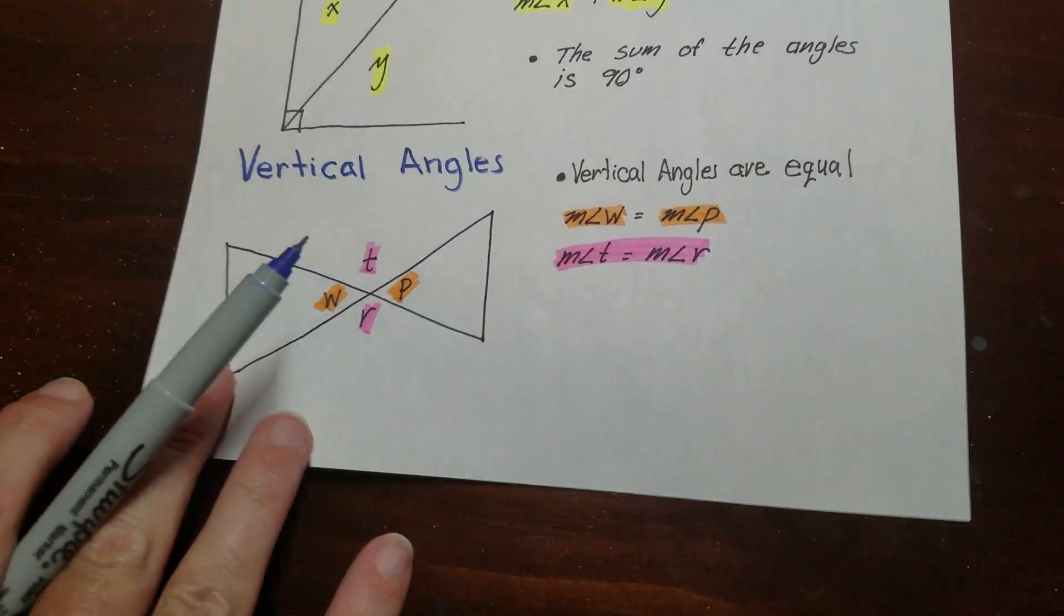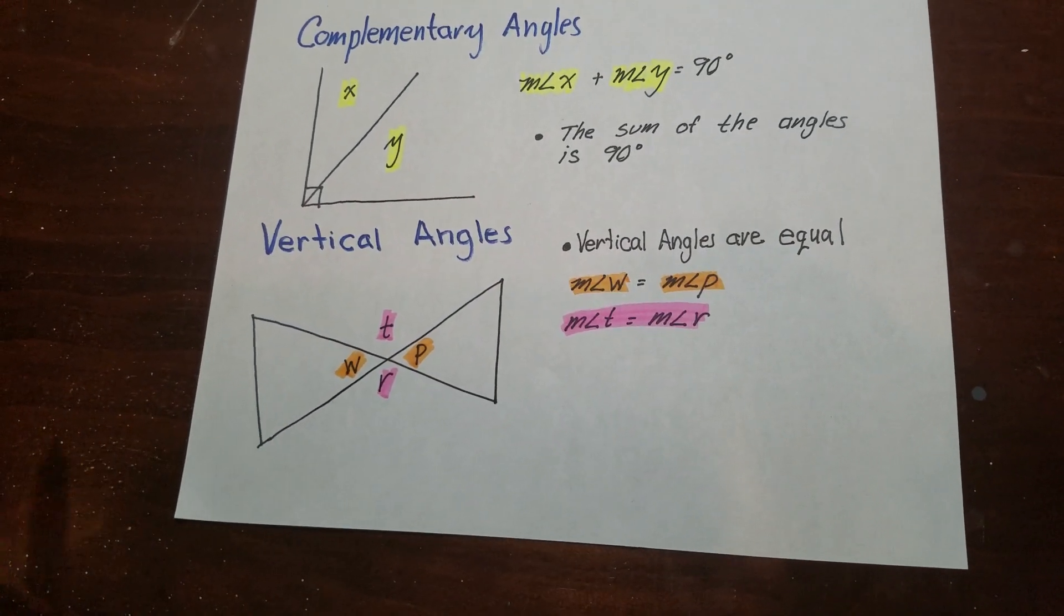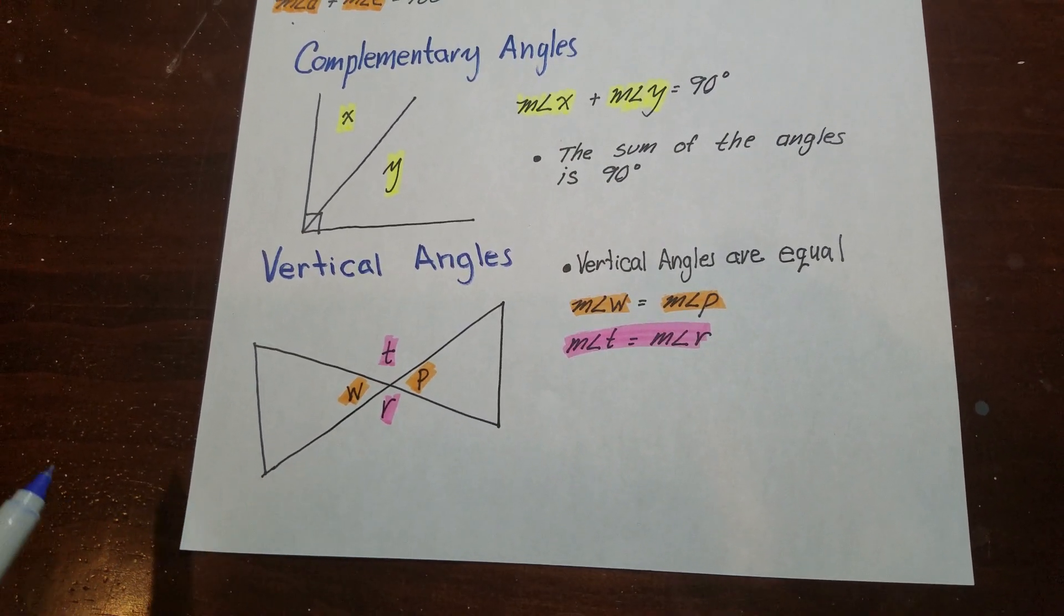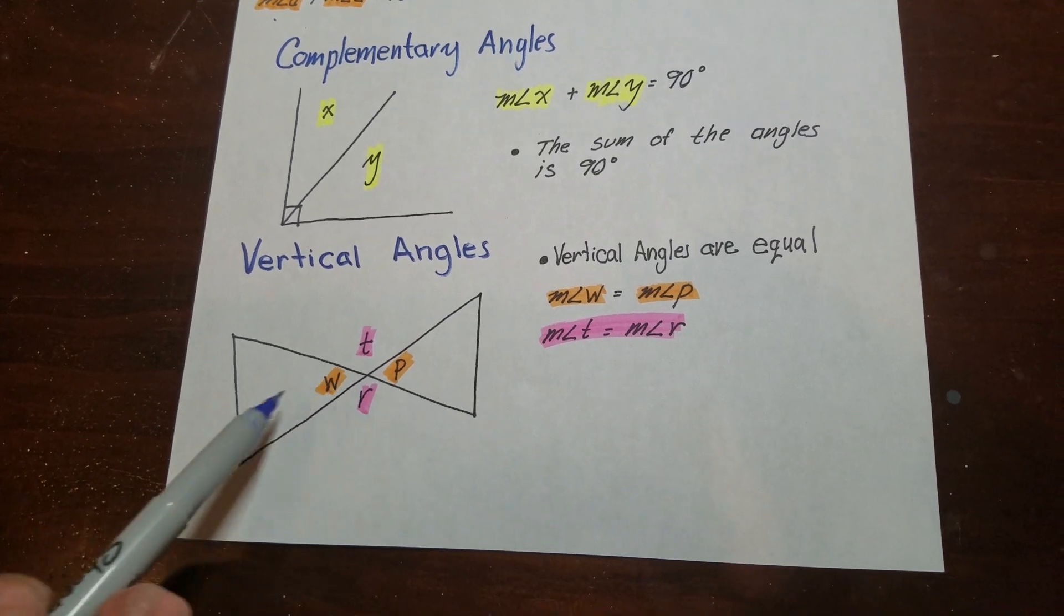Then we have the vertical angles. So vertical angles are equal. They're equivalent to each other. If these were two sticks crossing and I moved them back and forth, these would always stay the same.